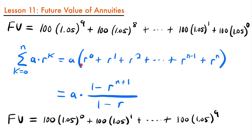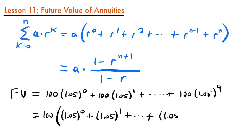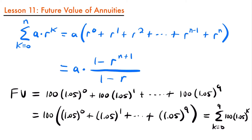Notice there is a constant a that is pulled out of the terms in the geometric series formula. Doing the same here, our future value equals 100 times the quantity (1.05 to the power of zero plus 1.05 to the first power, continuing up to 1.05 to the ninth power). Rewriting this with sigma notation, this is equal to the sum from k equals zero to n equals nine of 100 times 1.05 to the power of k. Now that we've written our annuity calculation as a geometric series, we can use the formula to find its sum.